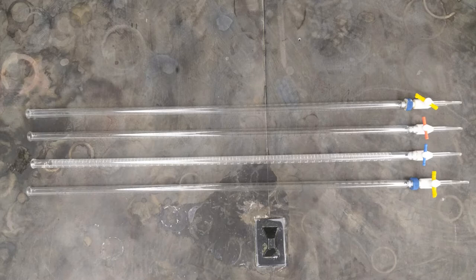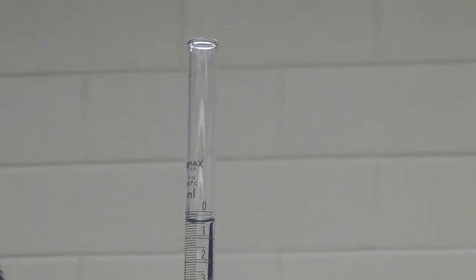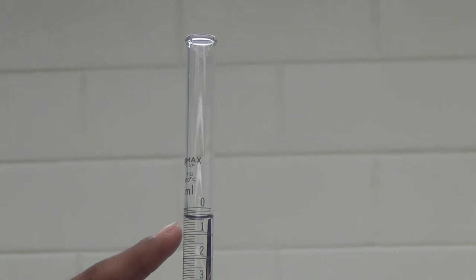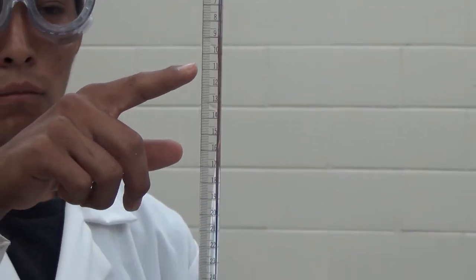Burettes are tall and thin, usually glass tubes with a stopcock at the bottom. The markings on the burette start at zero on the top and end at the burette's capacity, in this case 50 milliliters. The markings go top to bottom because it measures the volume of liquid dispensed.